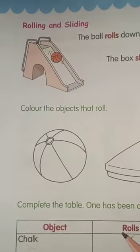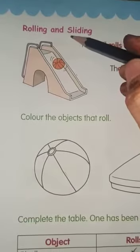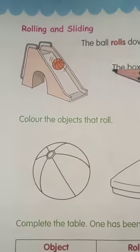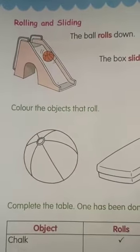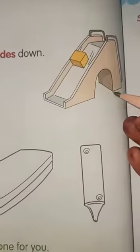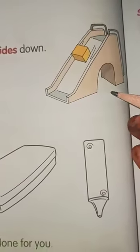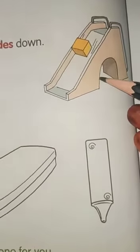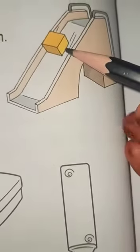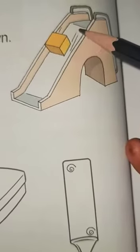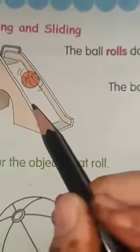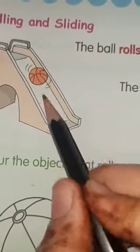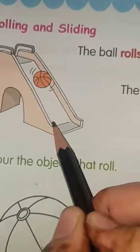The next concept is rolling and sliding. Did you slide on the slider anytime? Of course you have played in parks and in your schools. You can see that this box will slide down, and this ball rolls down. It rolls and comes down, and this slides and comes.